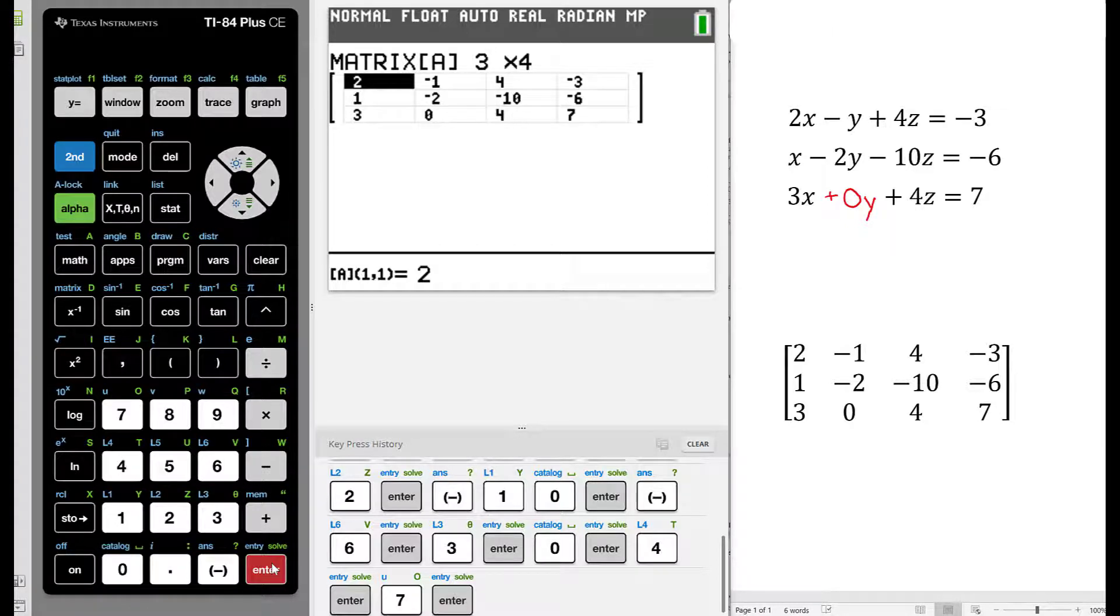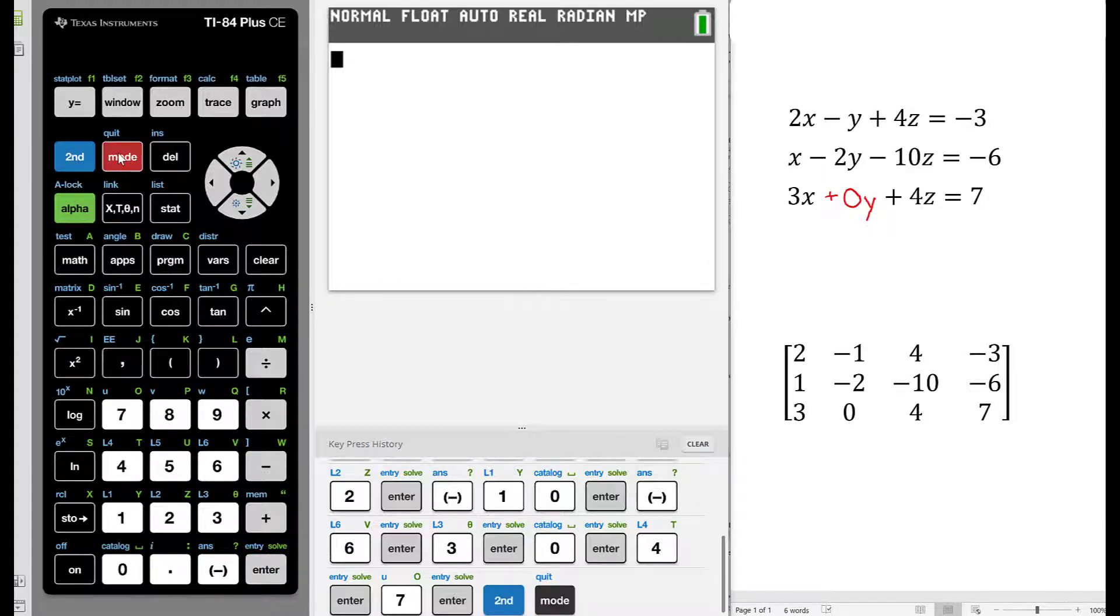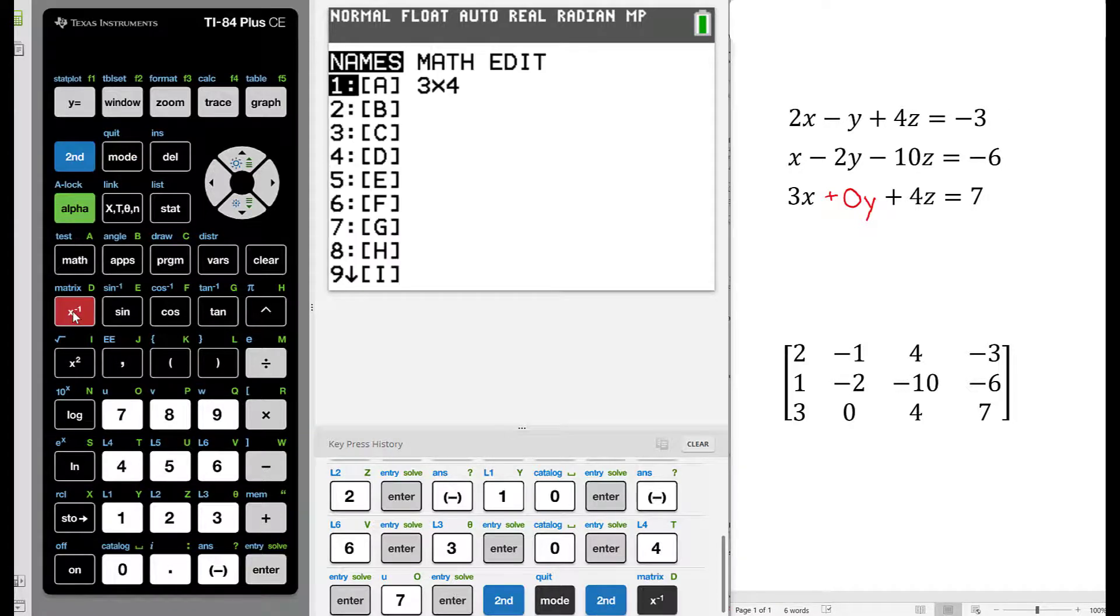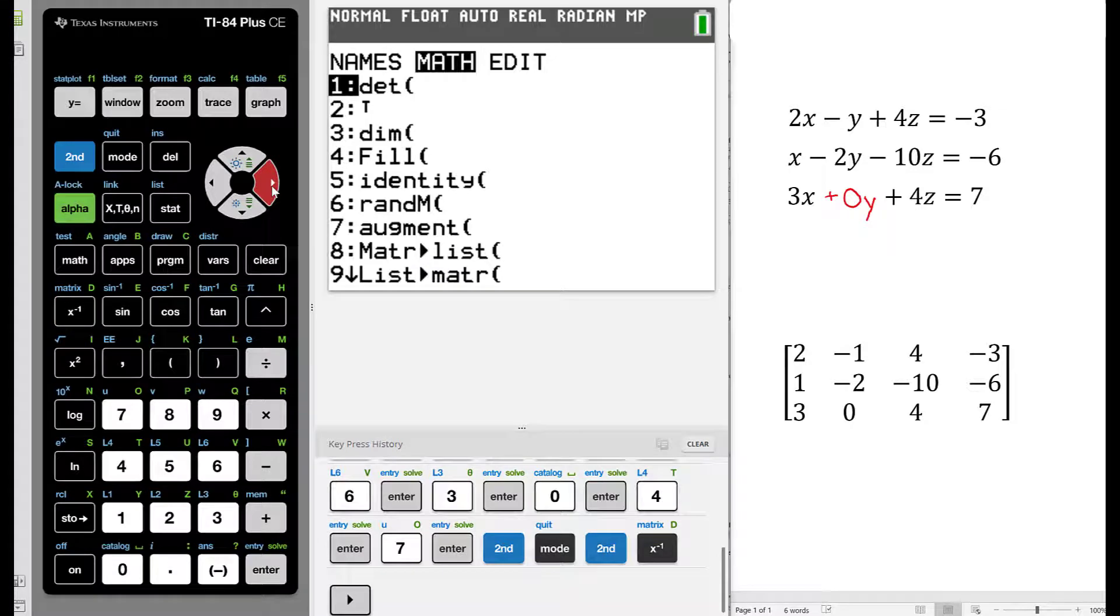Now that we have finished inputting the entries of our matrix, we're going to go to second and quit in order to exit. And now we're going to go second matrix, and we're going to scroll over one spot to the right to the math menu.